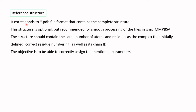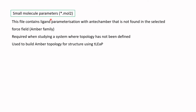The reference structure is a PDB file that contains the complete structure. It is optional but recommended for smooth processing in GMX MMPBSA. It should contain the same number of atoms and residues as the complex, with correct residue numbering and chain IDs. The mol2 file contains ligand parameterization with antechamber that is not found in the selected force field, and is required when studying a system where topology has not been defined. It is used to build the AMBER topology for the structure using tleap.